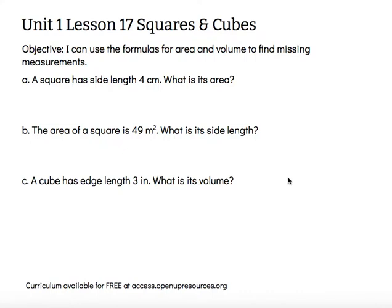Letter A. A square has a side length of 4 centimeters. What is its area? Well, area is a two-dimensional attribute, and when we think about area, we think of how much stuff do we need to cover that two-dimensional surface.